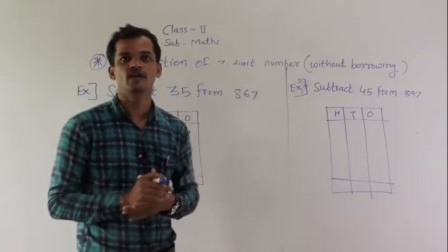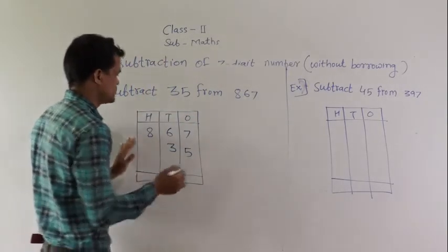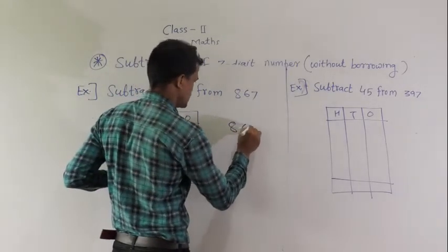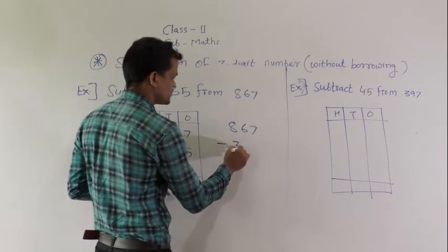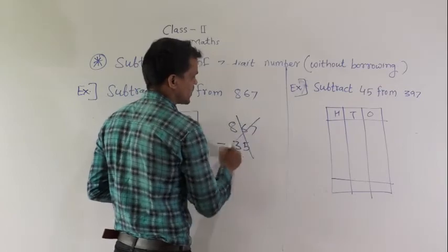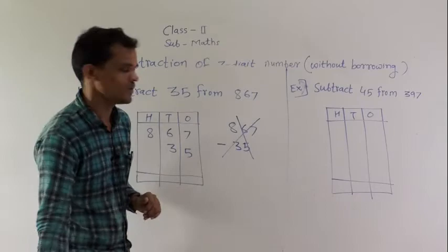This is the correct way to write the numbers. If you write 867 minus, if you start from 100's place to write, then your answer will come wrong. So, this is the correct way to write.